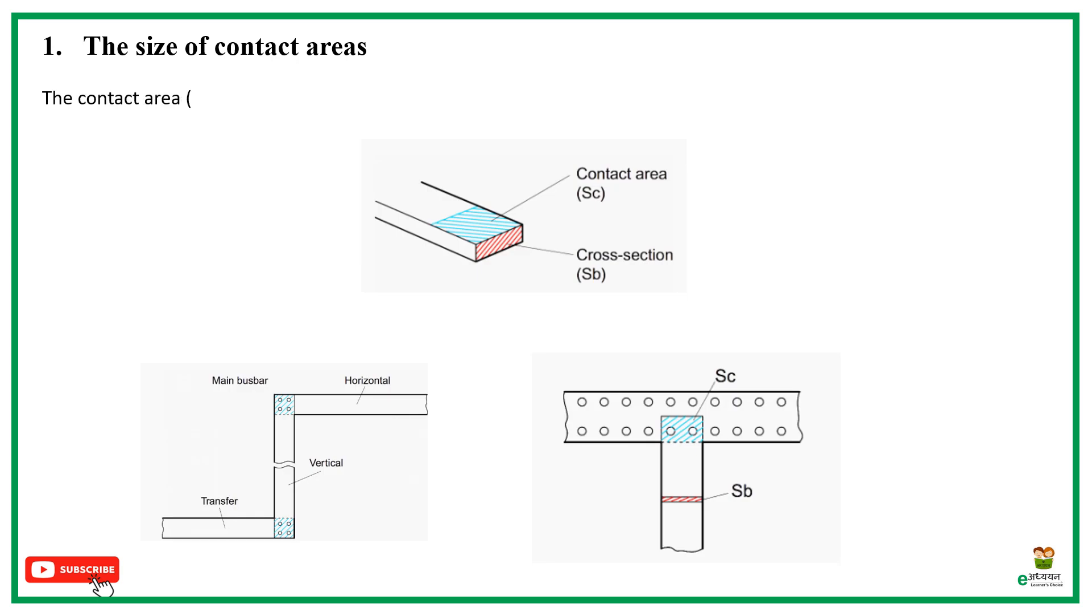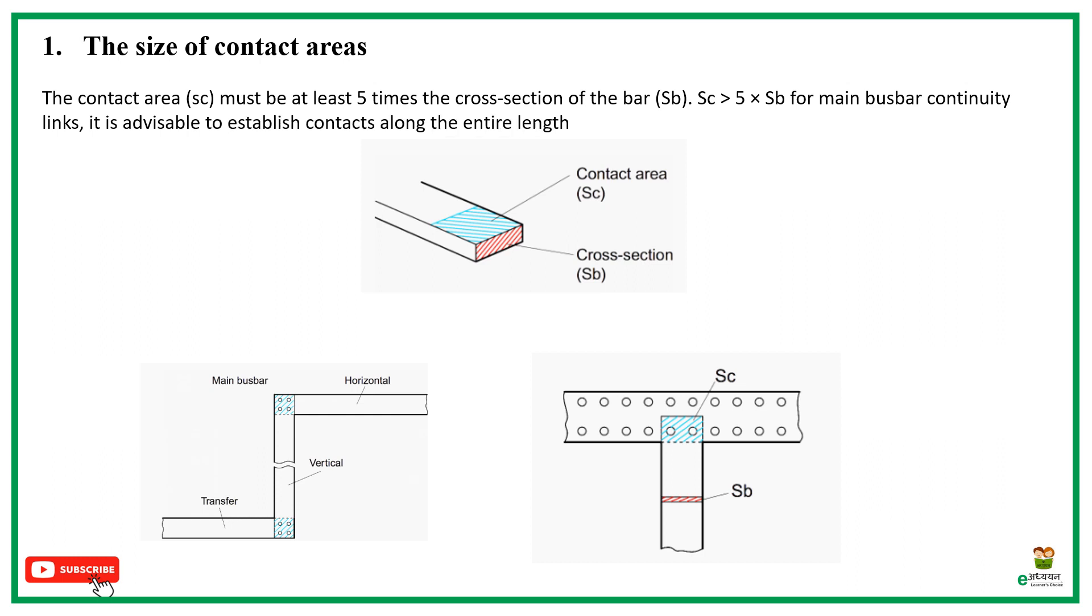The size of contact areas. The contact area SC must be at least 5 times the cross-section of the bar SB. SC equals 5 times SB for main buzzbar continuity links.